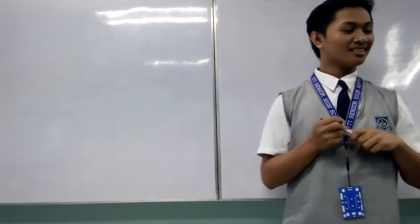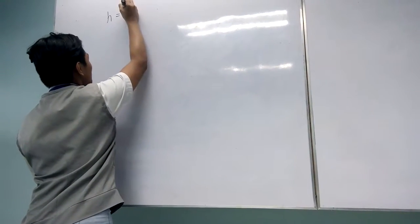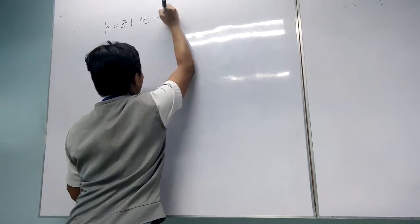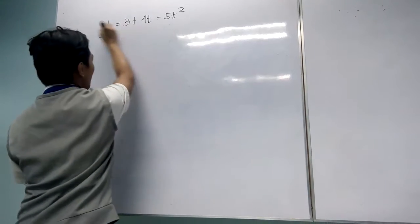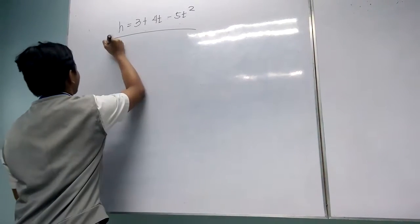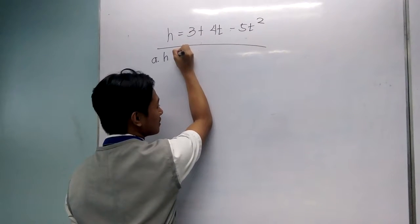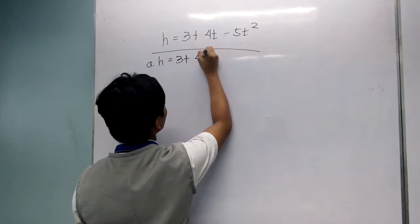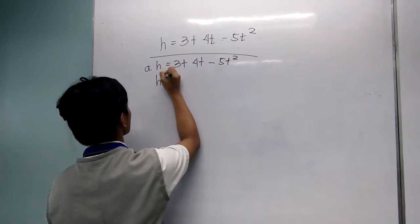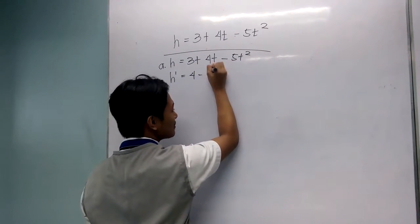So let's try a sample. H equals 3 plus 4t minus 5t squared. So this is our given. First step: H equals 3 plus 4t minus 5t squared. So H prime equals 4 minus 10t.